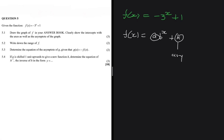So if we have f(x) = -3^x + 1, then y = 1 is going to be our asymptote. So y = 1 is our asymptote, and now we're just left with finding the intercepts.